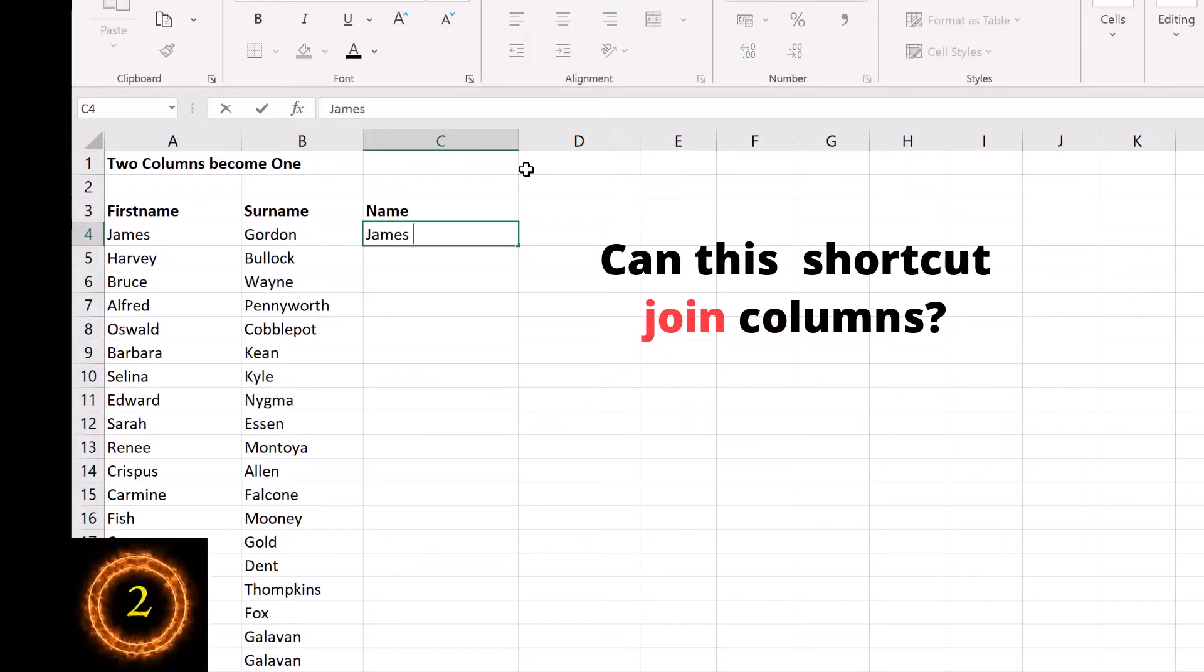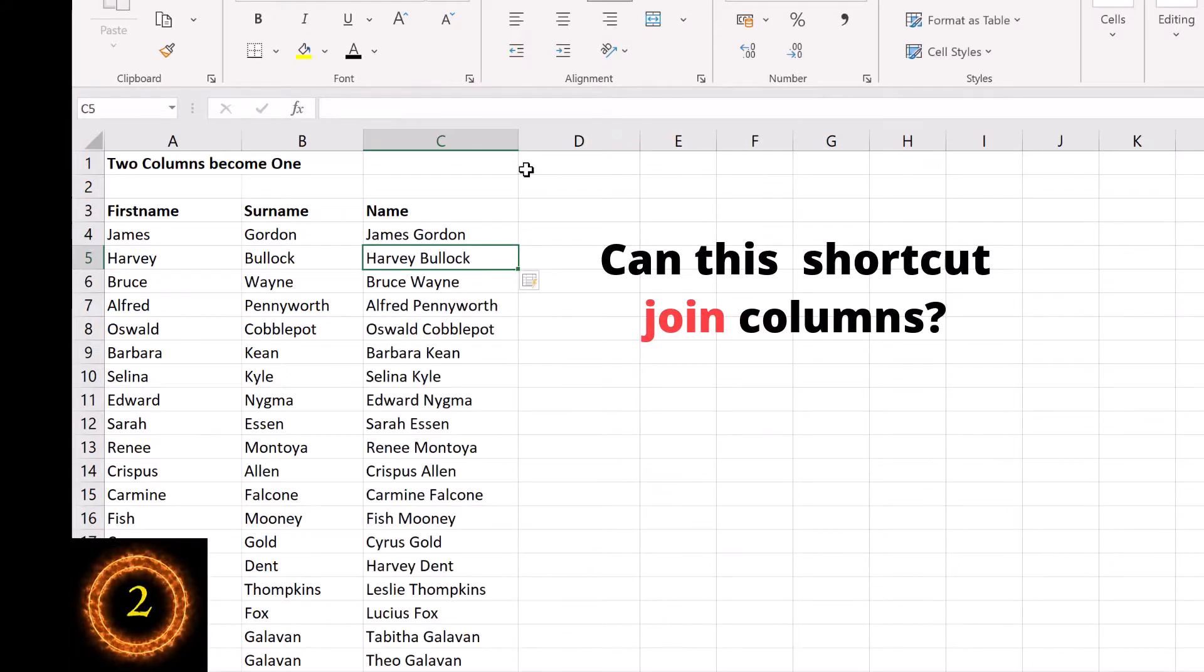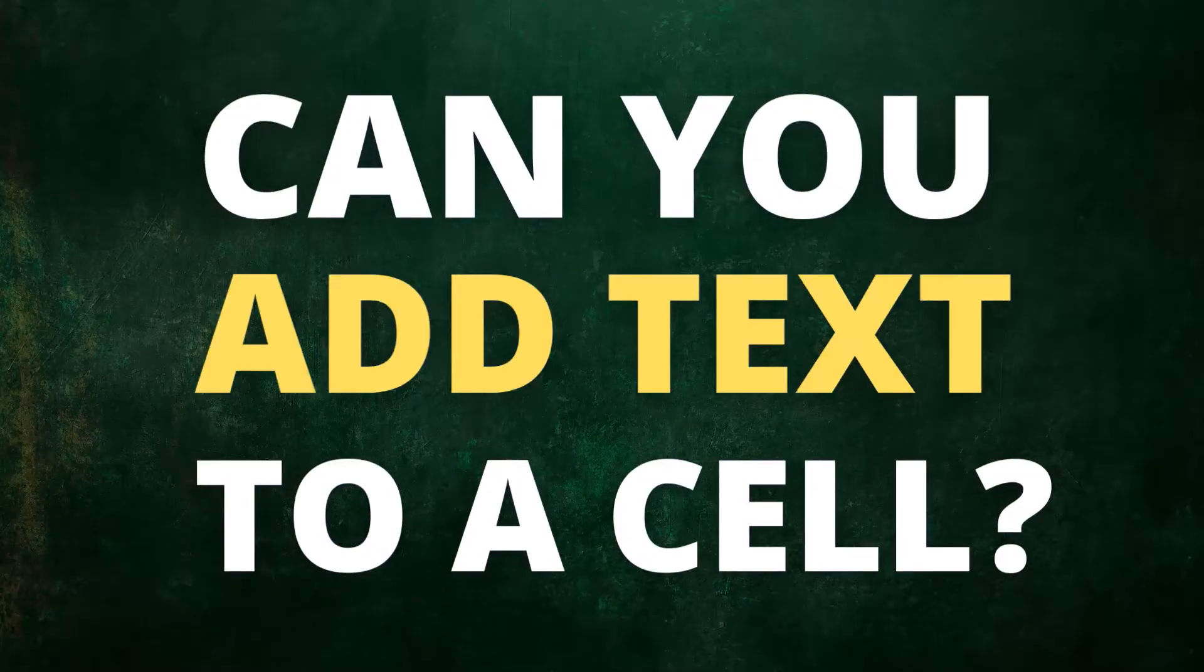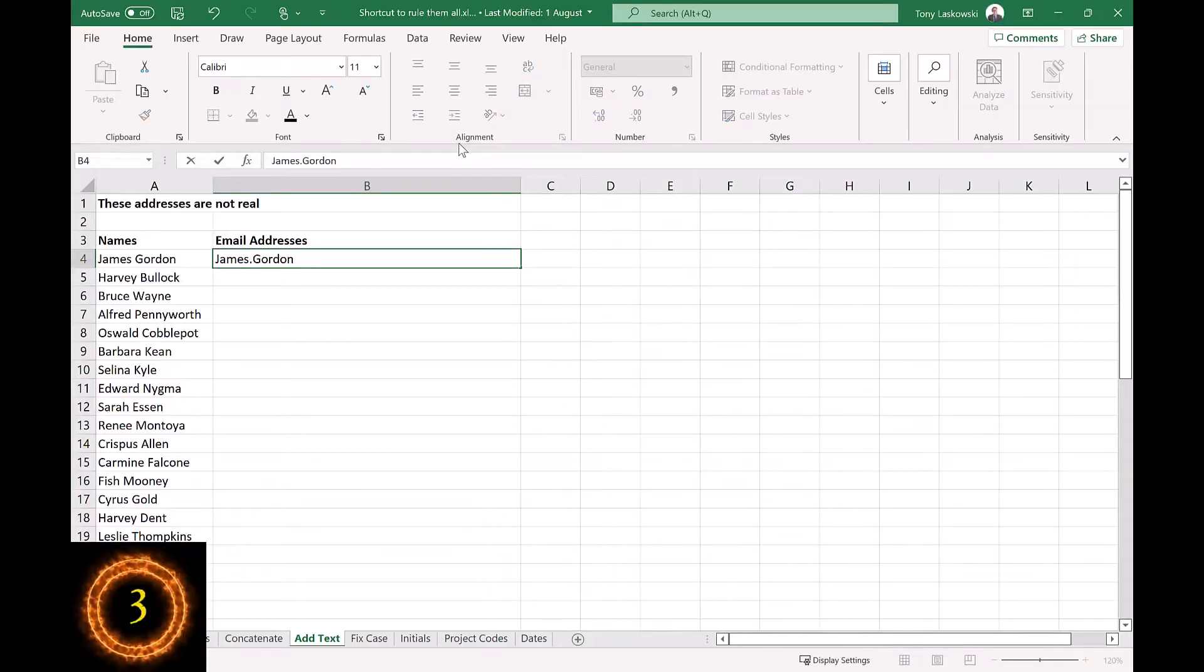Can it join two columns? Oh yes. What about adding text? The same shortcut can do this too. Just enter the format you want and hit the shortcut.